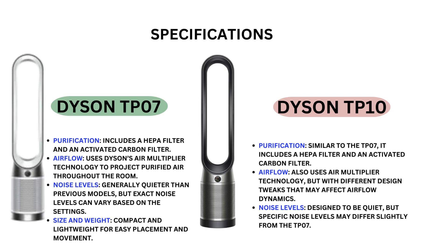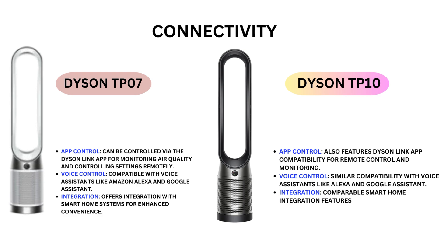Noise levels: the TP-10 is designed to be quiet, but specific noise levels may differ slightly from the TP-07. Connectivity — Dyson TP-07 app control: can be controlled via the Dyson Link app for monitoring air quality and controlling settings remotely. Voice control: compatible with voice assistants like Amazon Alexa and Google Assistant.